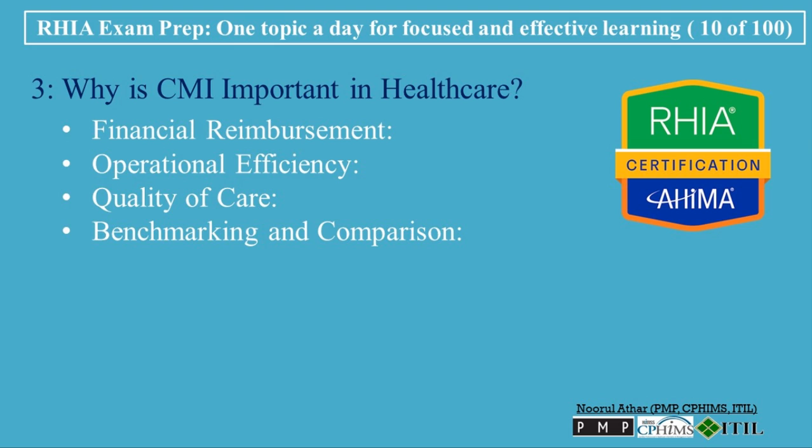Benchmarking and Comparison: CMI is also used for benchmarking and comparing the performance of different hospitals or departments. By comparing CMI, healthcare administrators can identify trends, understand their position relative to other institutions, and make data-driven decisions to improve operations. Strategic Planning: CMI plays a key role in strategic planning. Hospitals use CMI data to make decisions about expanding services, investing in new technologies, or opening new departments. A higher CMI may justify the need for more specialized services or facilities.